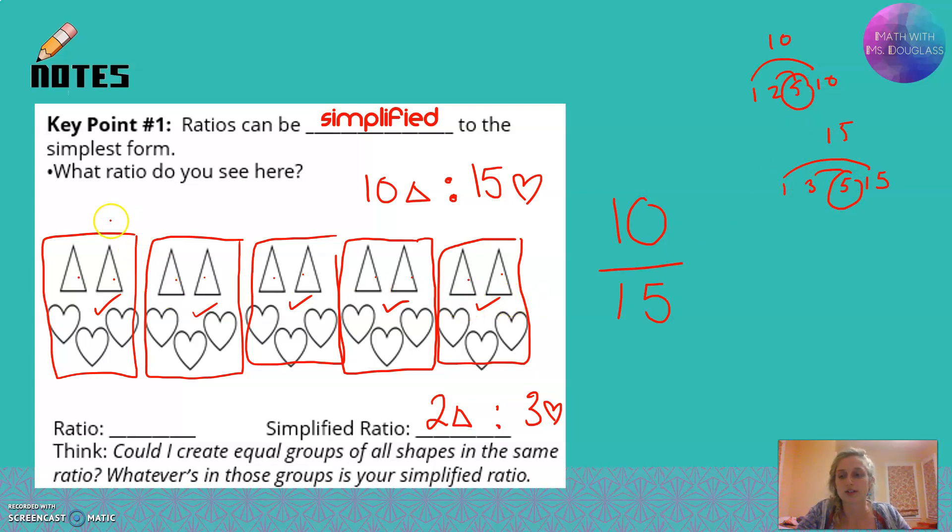You can see over here that I broke this bigger picture up into 1, 2, 3, 4, 5 equal groups. So then when you simplify, you're going to divide both parts of your ratio, or if it's in fraction form, both your numerator and your denominator, by the same greatest common factor.